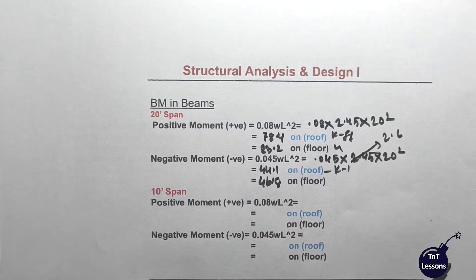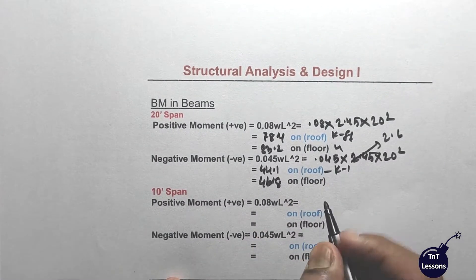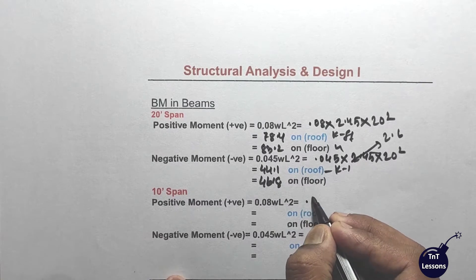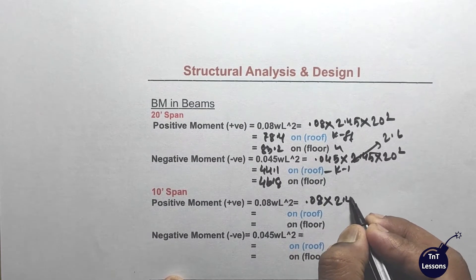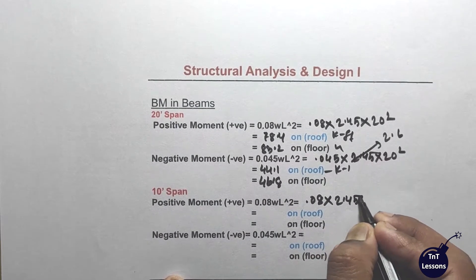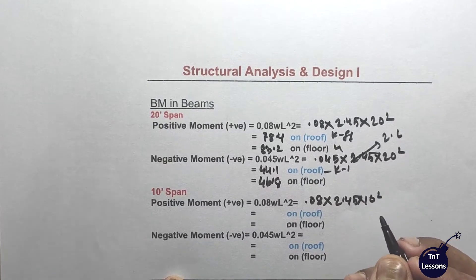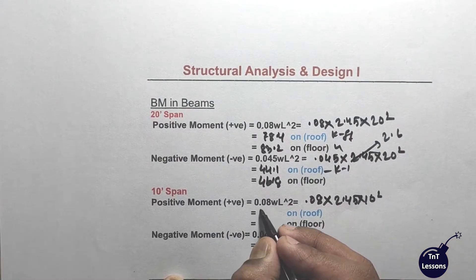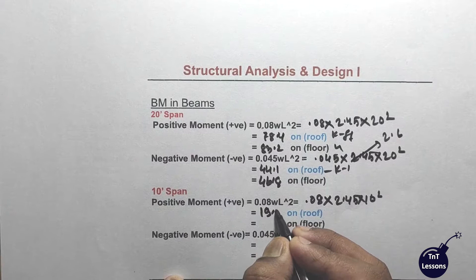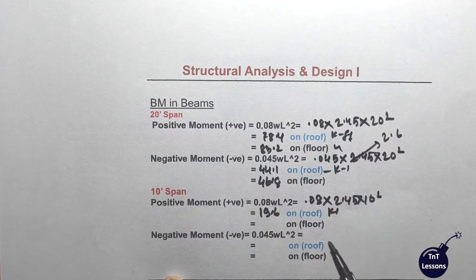At the same time, for the 10-foot span. Then you get 10 feet squared. Then you get 0.08 times 2.45 into L squared. So the number is 10 feet per square, giving 19.6.